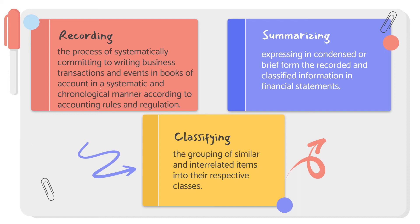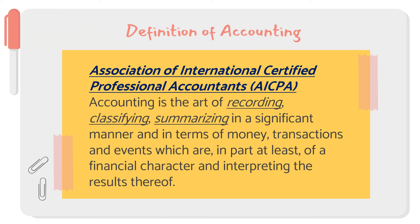Going back to the AICPA definition: it is the art of recording, classifying, and summarizing in a significant manner, and in terms of money, transactions and events. This is consistent with our earlier definitions from AAA and ASC — quantitative information, primarily financial in nature. And the last part is to interpret the results, or to make economic decisions from the recording, classifying, and summarizing process. That's the definition of accounting according to AICPA.